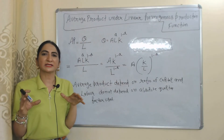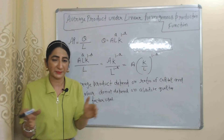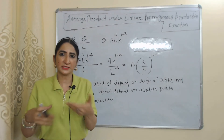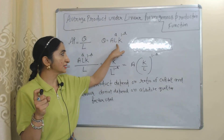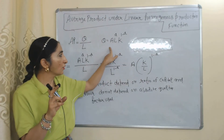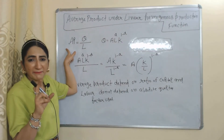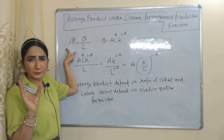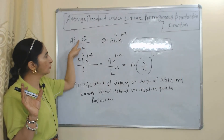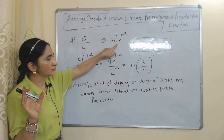Now we will calculate the average product of labor under the linear homogeneous production function. The Cobb-Douglas production function is a linear homogeneous production function, and we will use this equation to calculate the average product of labor. Average product of labor means output per labor, and the formula is APL = Q/L, where Q is total output and L is the number of laborers.